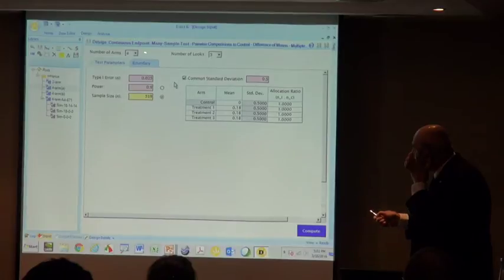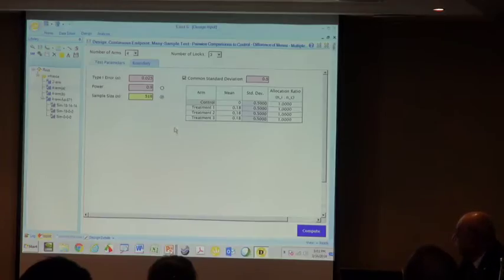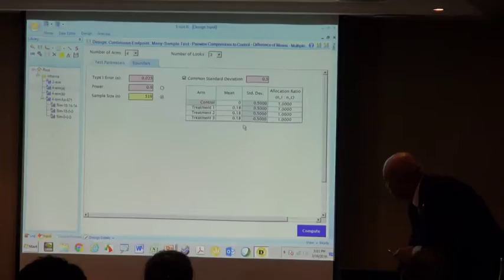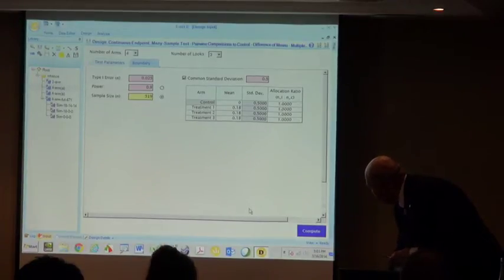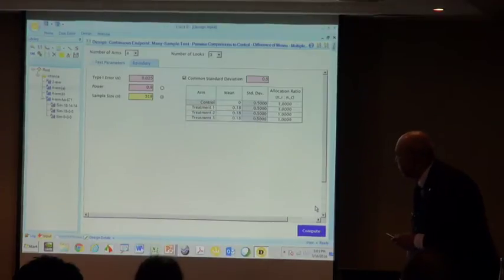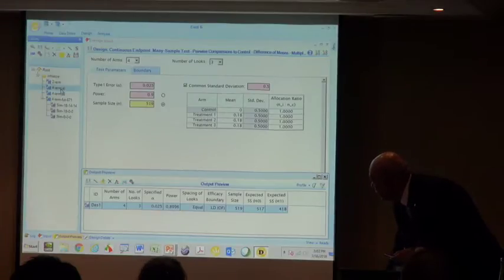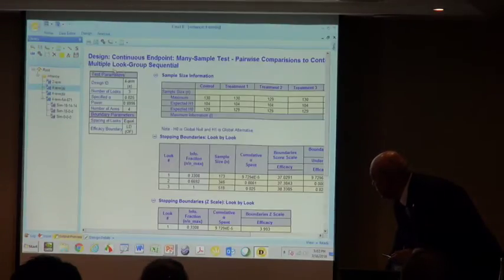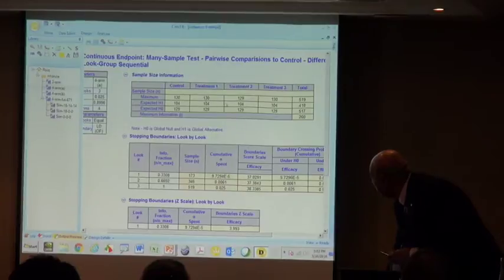You specify that you have three looks, you specify that you have four arms, and you want 90% power. You can specify the means: I'm now designing for three means of 0.18, 0.18, and 0.18 with an allocation equally allocated and a sigma of 0.5. Then I can press the compute button and I'll get the output which I've saved over here.